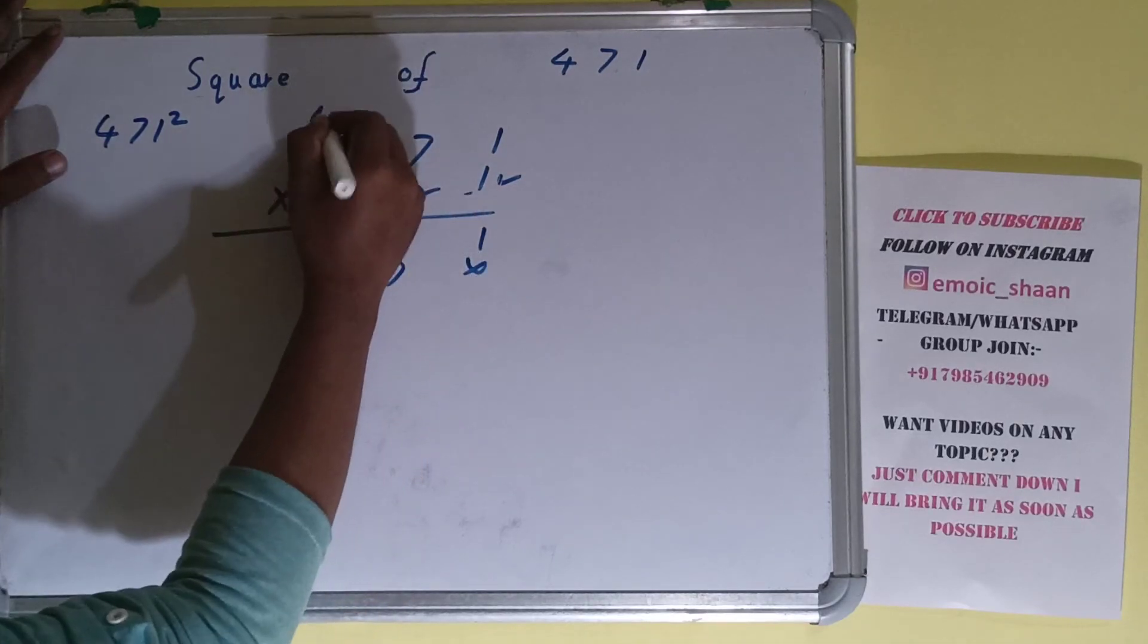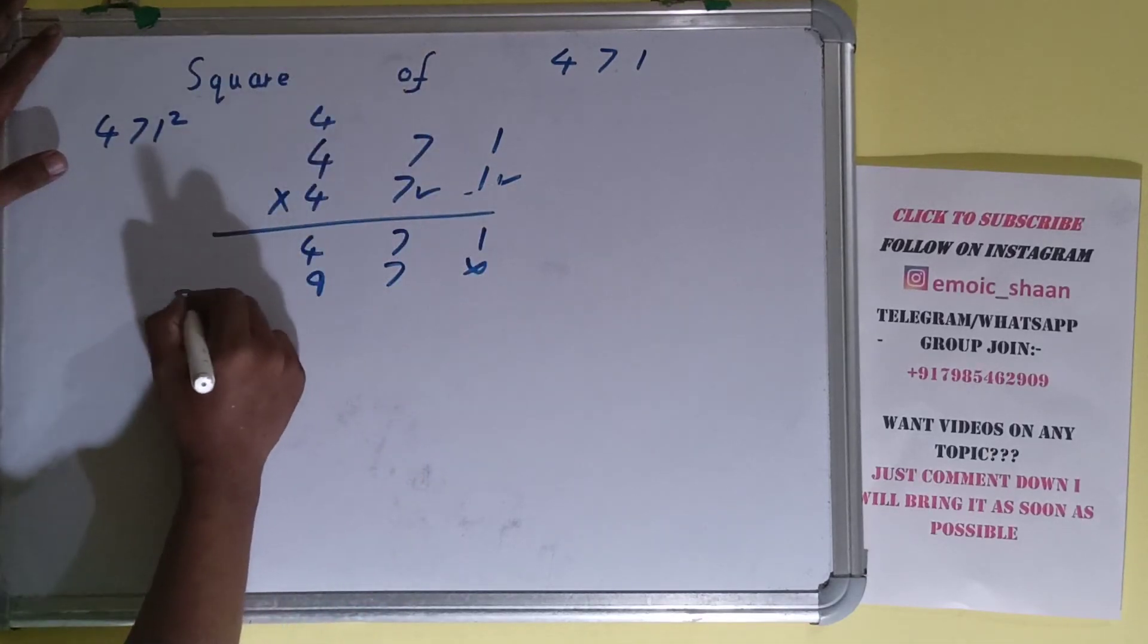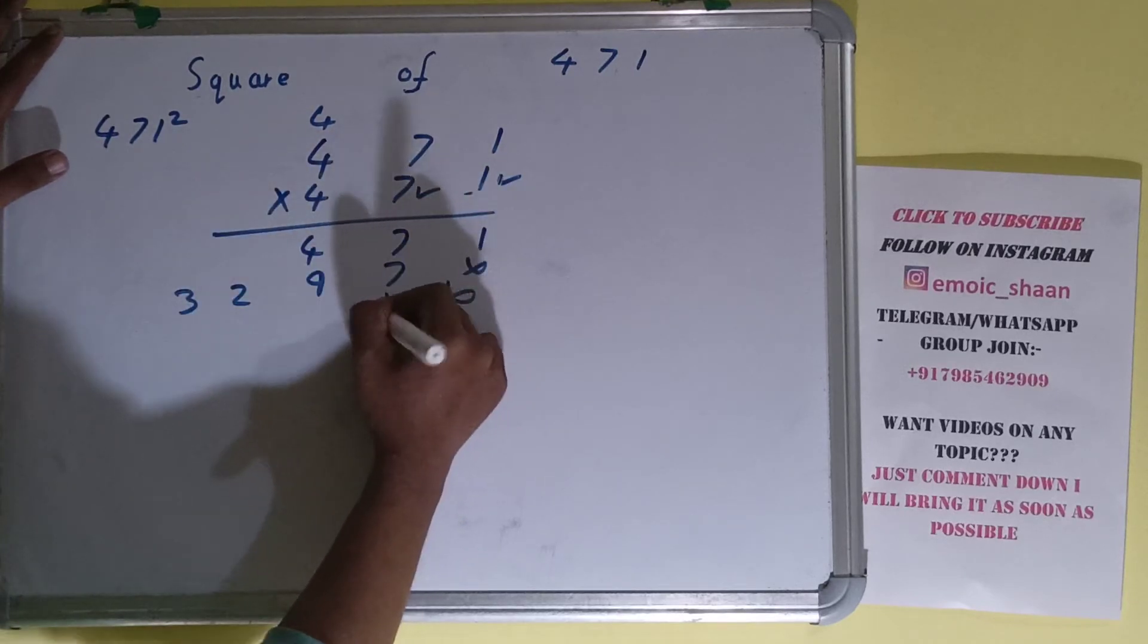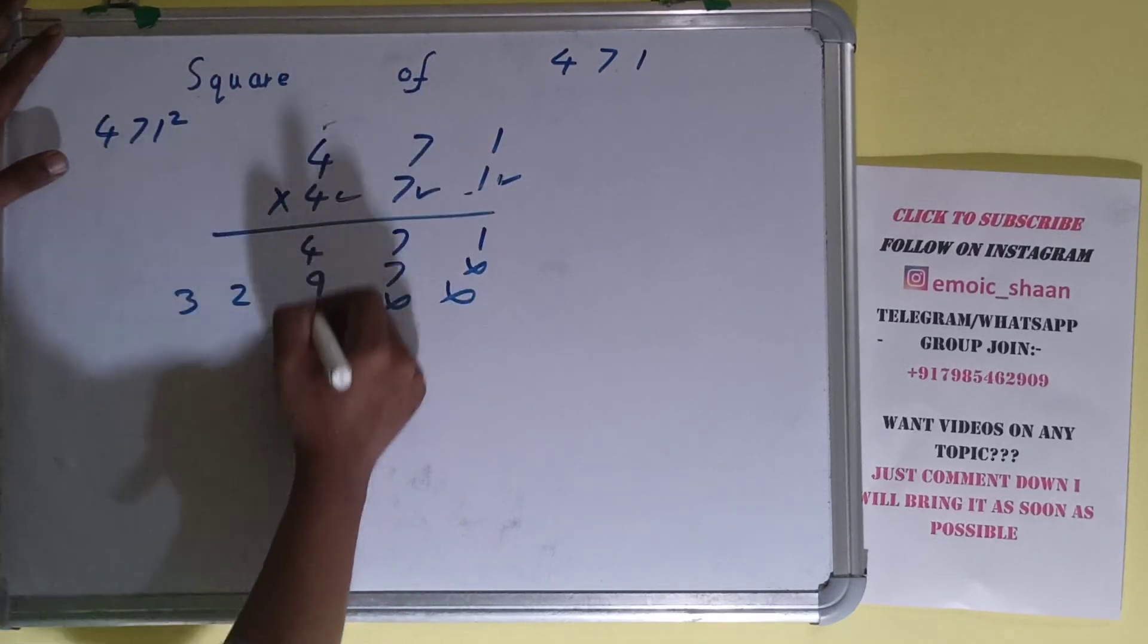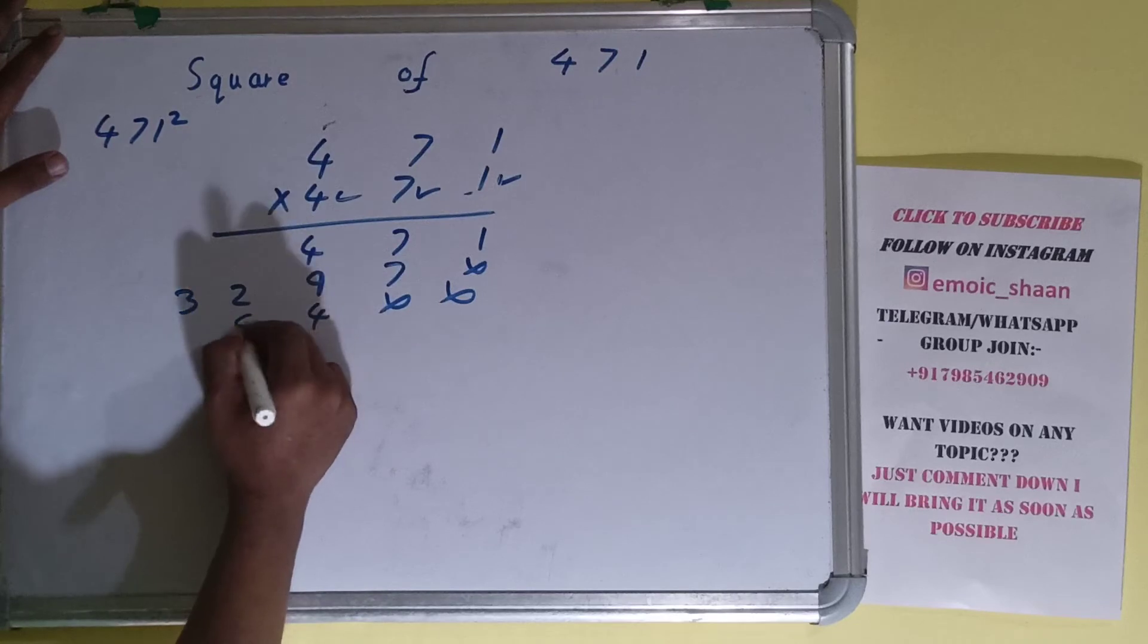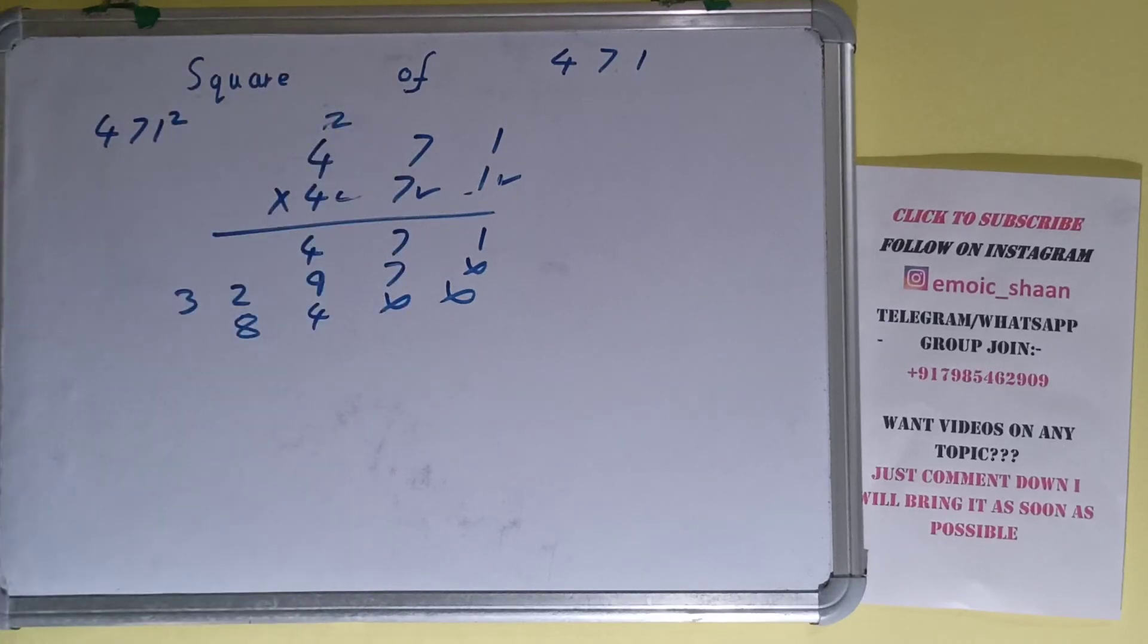Now this four: four ones are four, seven fours are twenty-eight, two carry, four fours are sixteen plus two is eighteen.